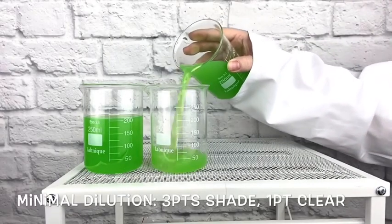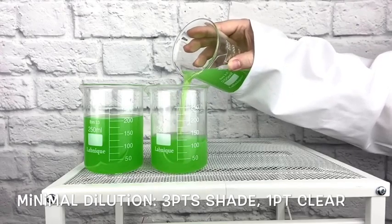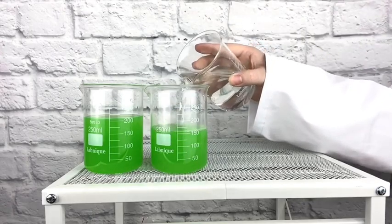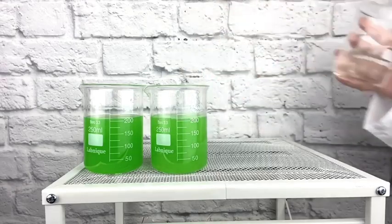Now we have Minimal Dilution, which is going to be three parts shade and one part clear. As we add the clear, you can see a little bit of translucency occur, but not a ton.